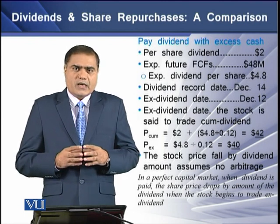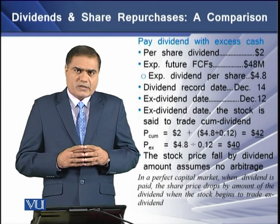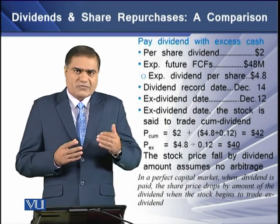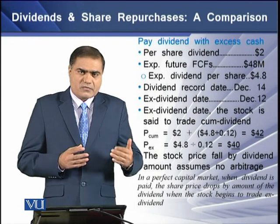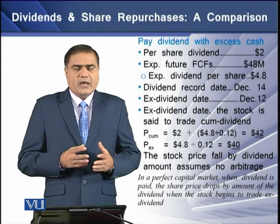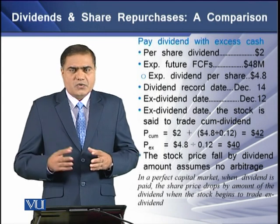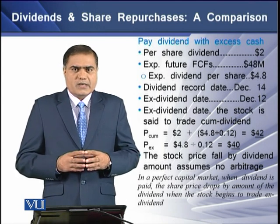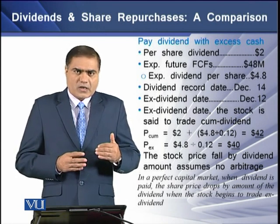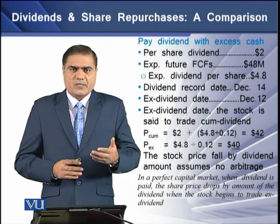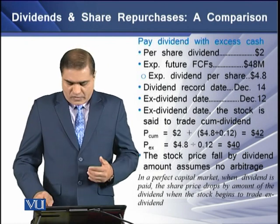There is also a decline of $20 million in cash on the firm's balance sheet on the asset side. This decline in the balance sheet is the cause of the reduction in the firm's share price accordingly.